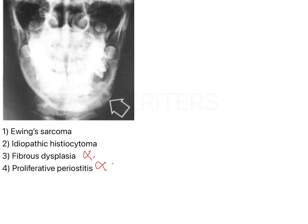Coming to idiopathic histiocytoma: histiocytoma is a soft tissue sarcoma, but it is a fibrous tissue tumor and does not affect bone or produce any bone reaction. Additionally, histiocytoma presents in older patients, typically from the mid-20s. Because of the lack of bone reaction and the inappropriate age group, idiopathic histiocytoma can also be ruled out.